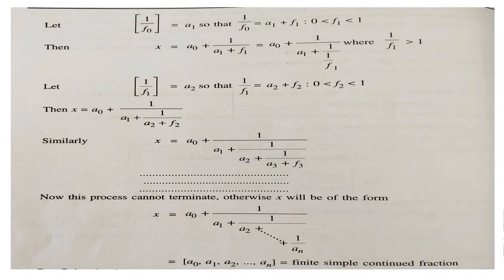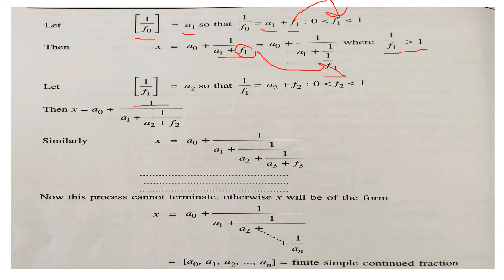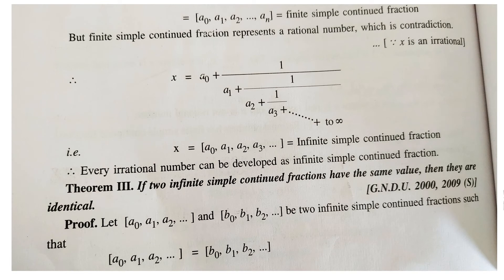Since 1/f₀ > 1, we take ⌊1/f₀⌋ = a₁, so 1/f₀ = a₁ + f₁. Substituting back and taking the reciprocal of f₁ gives a₂ + f₂, and so on. This process continues indefinitely — it cannot terminate. If it did terminate, x would be a finite simple continued fraction representing a rational number, which is a contradiction since x is irrational. So the process is infinite, confirming x is an infinite simple continued fraction.